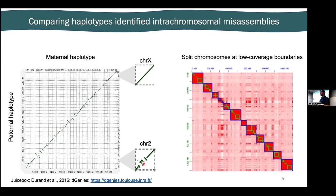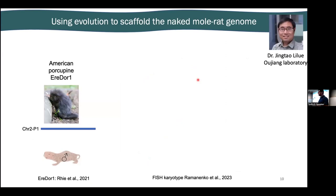So we went back basically one step. This is an overlay of our Hi-C data with the tool 3D DNA, which assigned blue boxes representing chromosomes and green boxes representing boundaries where it wasn't certain of scaffolding based on low Hi-C contact in that area. We took these green boxes and took advantage of evolution in a collaboration with Dr. Jing Tao Li Lu at Zhejiang University to scaffold our assembly using the American porcupine genome — a well-scaffolded, very complete genome from the vertebrate genome project. The idea is to map our assembly fragments to this closely related high-confidence species and use where our fragments align to order them within a chromosome.